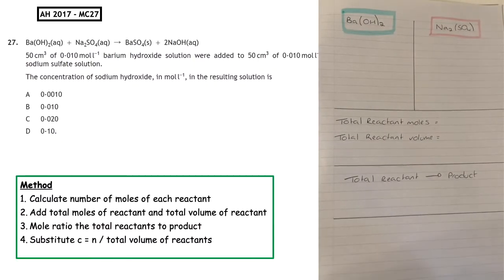In this question, we want to skim and scan to see how many substances they're giving us information about. They're giving us numerical data about the barium hydroxide and the sodium sulfate, and they want us to work out the concentration of the sodium hydroxide.